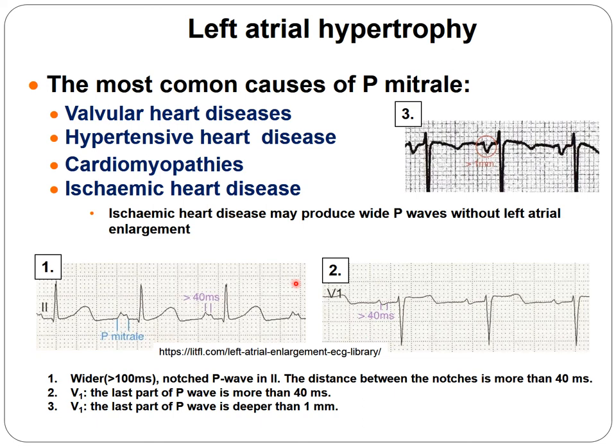To summarize the ECG signs of P mitrale: in lead II, the P wave is wider and notched, with two peaks at least one millimeter apart. In V1, the terminal phase is wider than one millimeter and deeper than one millimeter.